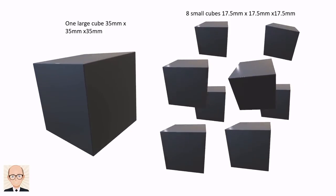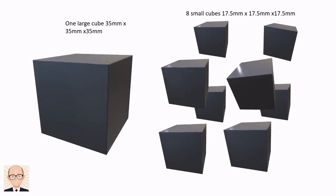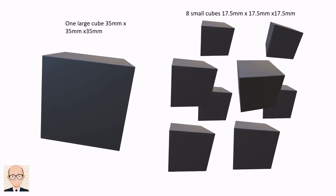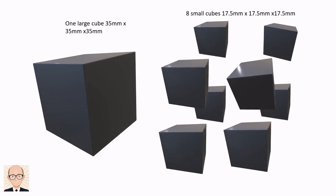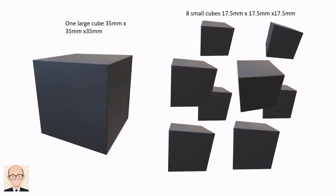In order to answer this question, we first need to calculate the rates of osmosis for both cubes over the first 40 minutes. Once we've done that, we'll need to divide these rates by the total surface area of each group of cubes to give us the rate per square millimetre.